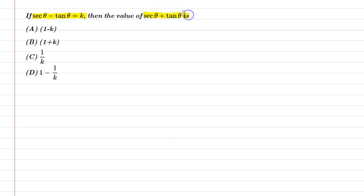So let's start. The question is given that sec θ minus tan θ is equal to k, and we have to find sec θ plus tan θ.